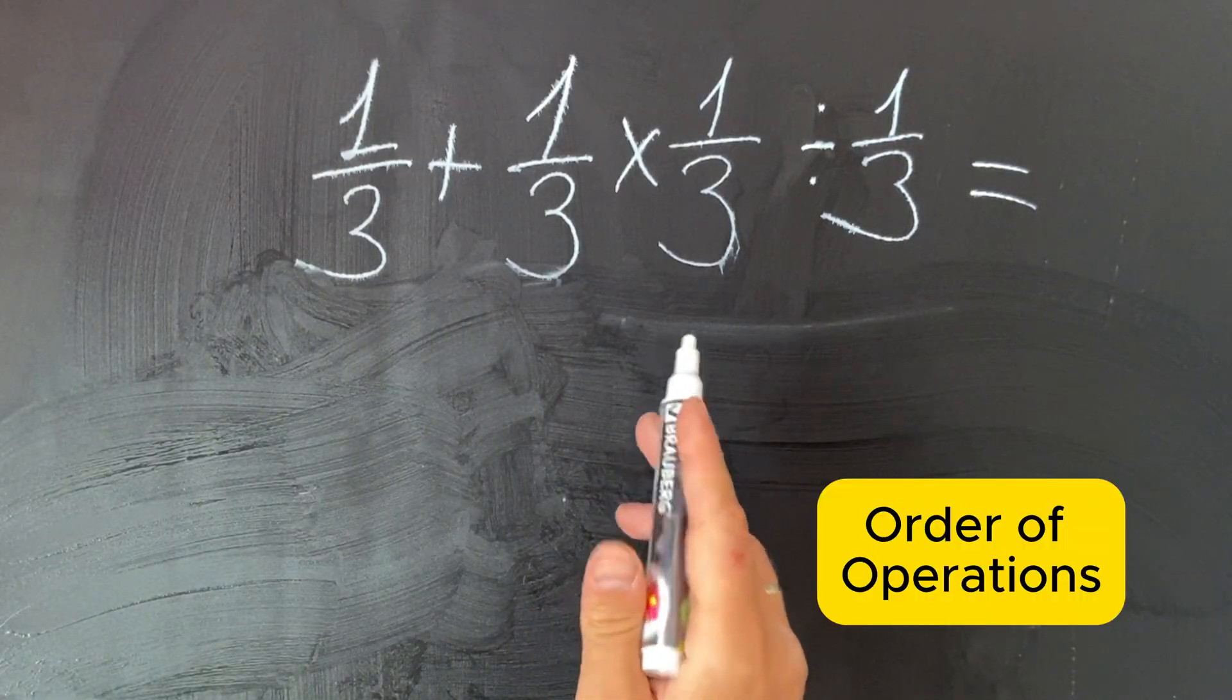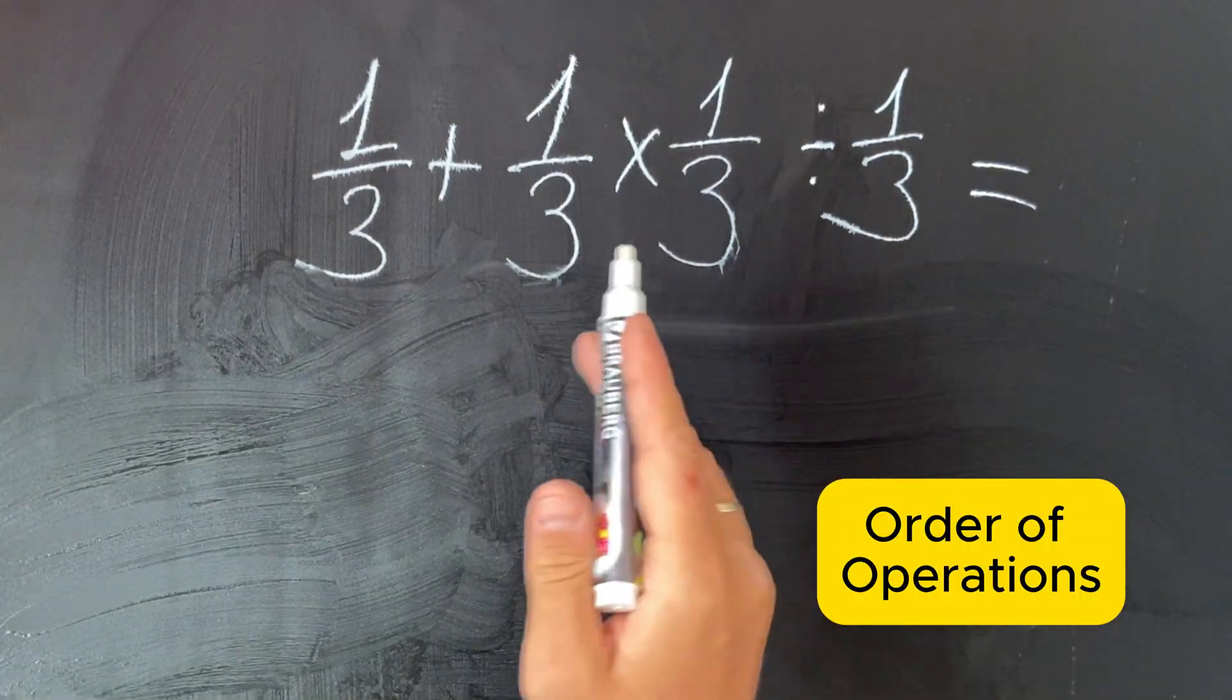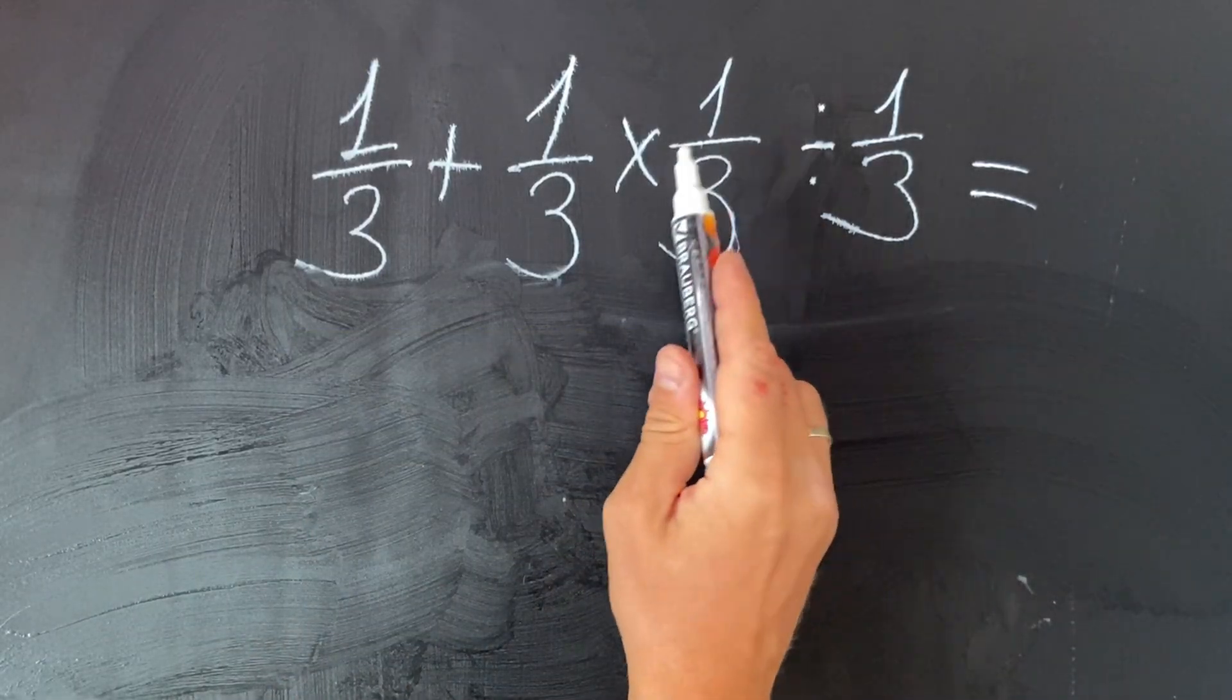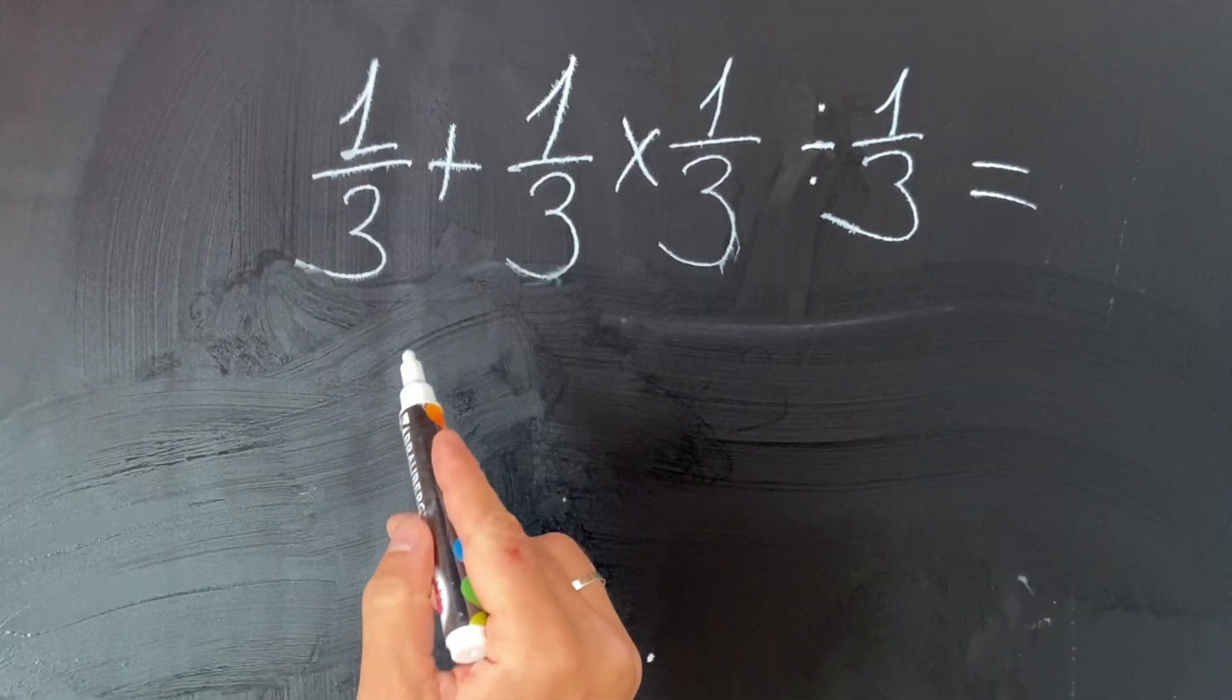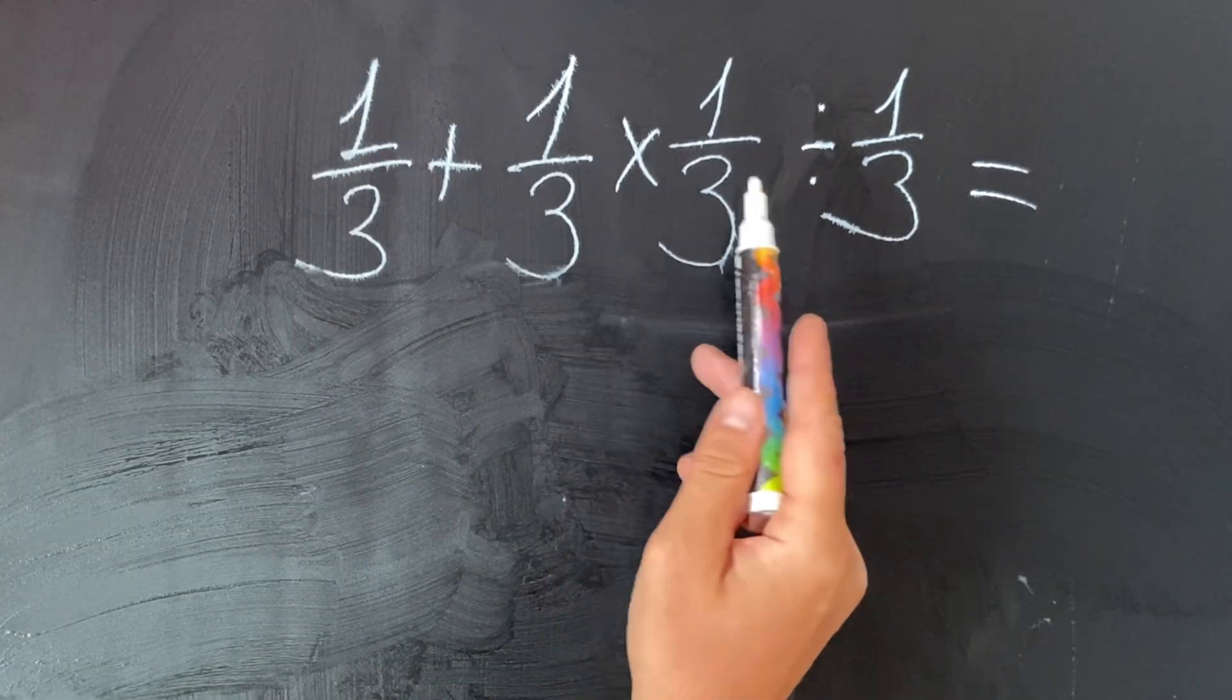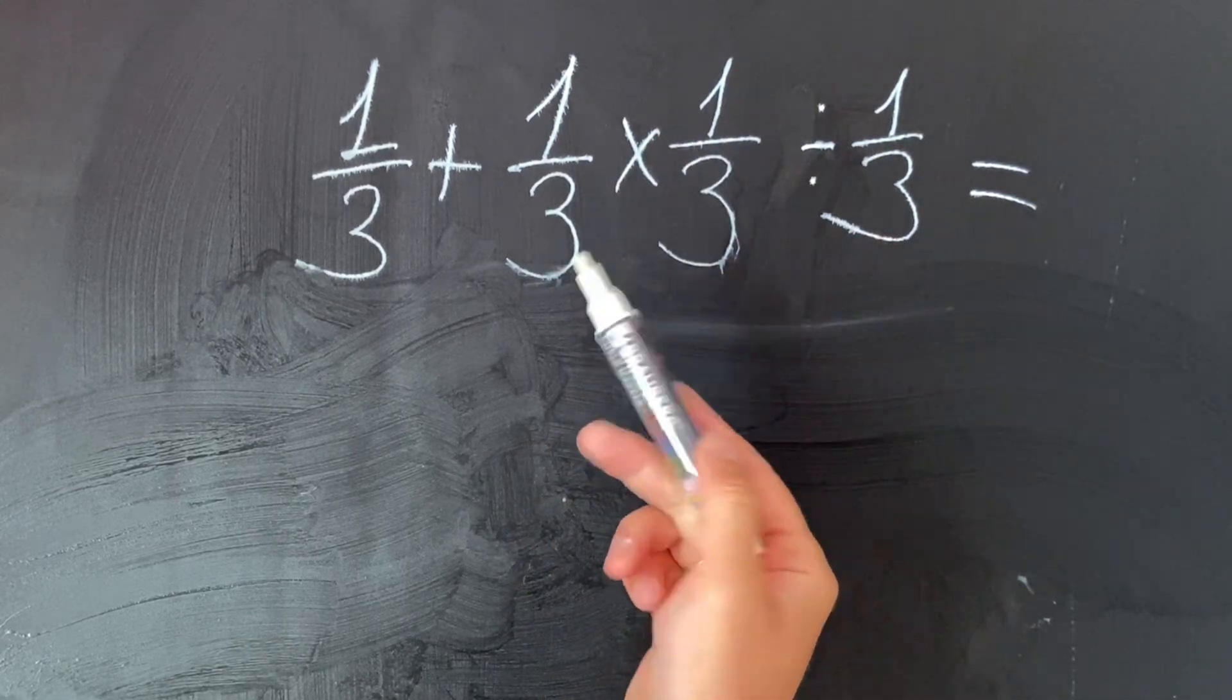The key here is the order of operation, also called PEMDAS or BODMAS. So we must do multiplication and division before the addition. When we have both multiplication and division with fractions, we work from left to right.